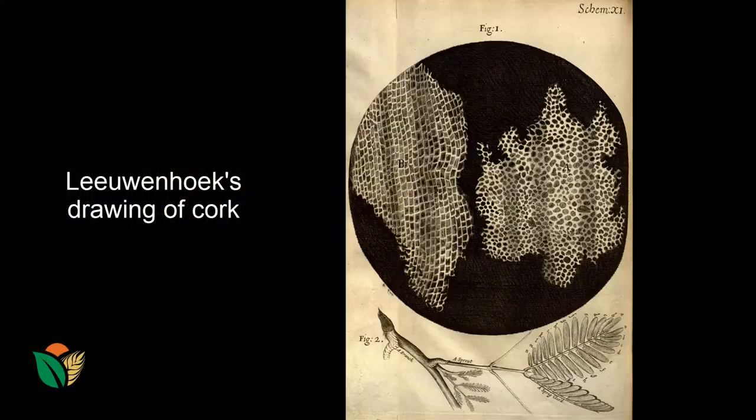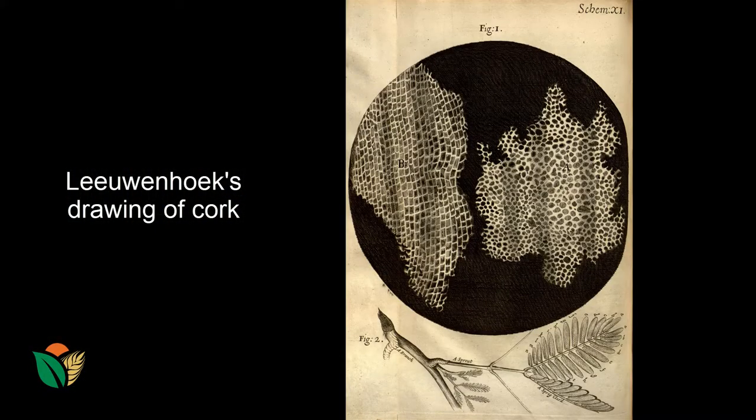Robert Hooke described the cell theory, or coined the term cell, from his drawing of a very finely sliced piece of cork. It looked like a set of rooms of a multi-storey apartment block.